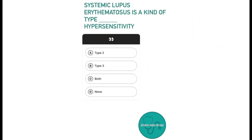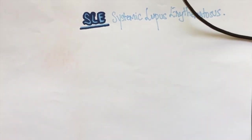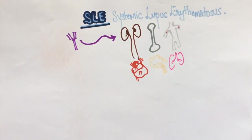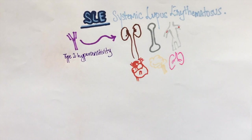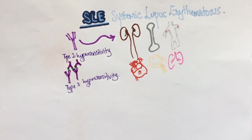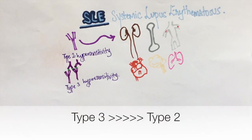Question number one: SLE is a kind of type dash hypersensitivity. Option A type 2, option B type 3, option C both, option D none. The answer to this question is both. SLE is an autoimmune disease in which antibodies attack different organs of our body. The antibodies either affect the organs directly, which is a type 2 hypersensitivity reaction, or form immune complexes and get deposited on organs and damage them, which is an example of type 3 hypersensitivity. Although the pathogenesis of lupus majorly involves type 3 hypersensitivity, a small bit of organ damage can also take place by the direct attack of antibodies on the organs.